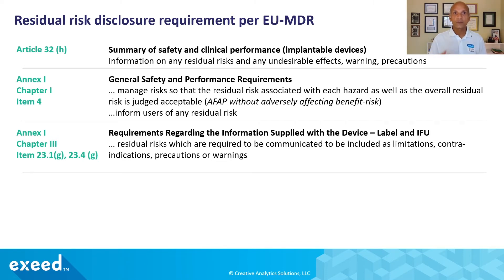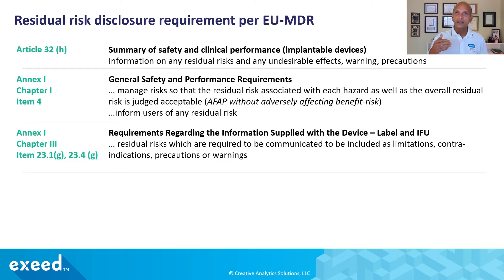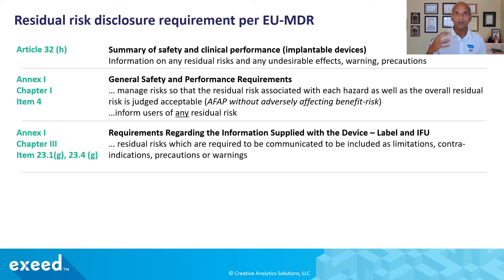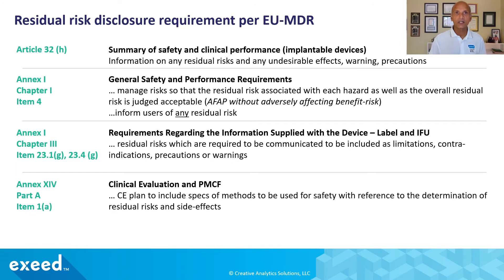In Annex 1, Chapter 3, additional requirements related to information supplied with the devices — the label and the IFU — residual risks which are required to be communicated should be included as limitations, contraindications, precautions, or warnings. Depending upon the severity of the consequence of those residual risks, you can organize the communication accordingly so that it can be more organized, more informative, and more actionable.